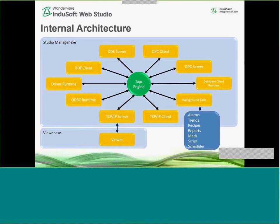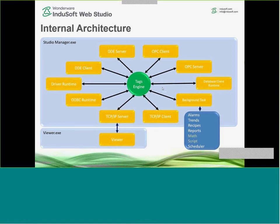Let's take a look at the internal architecture of the product to better understand how our features and tools work. We have a main core called the tags engine — our tags database and several other tasks that are connected to each other through that database. If we use our communication driver to get data from a field device, we get the data and throw it to the tags database. From there we can generate alarms, save trend history, or send data to our TCP/IP server for visualization on our local viewer, web sync clients, mobile access, or any visualization tool we have.